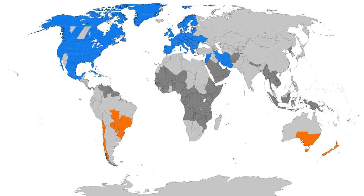Russia's 2011 declaration that it would stay in DST all year long was subsequently followed by a similar declaration from Belarus. Russia's plan generated widespread complaints due to dark wintertime mornings and was abandoned in 2014. The country changed its clocks to Standard Time on October 26, 2014, and intends to stay there permanently.